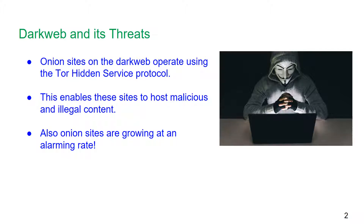Sites on the dark web operate using the Tor hidden service protocol to shield their locations on the internet. Because these websites are hosted in an anonymous manner, it makes it difficult for law enforcement to shut them down. This allows the sites to host malicious and illegal content while being resistant to legal action and seizure. Some recent examples include drugs and weapons marketplaces like Silk Road, hacker forums publishing details of identity thefts.